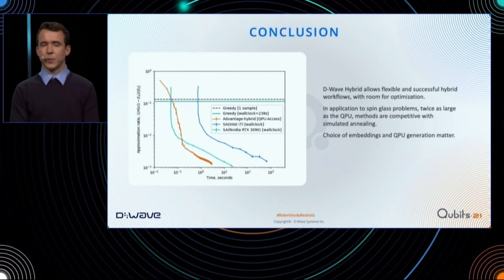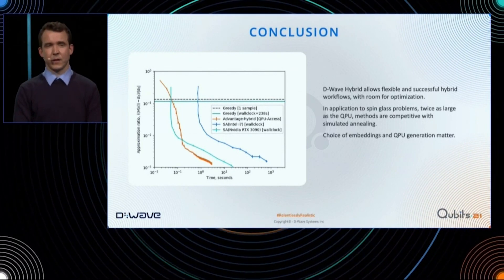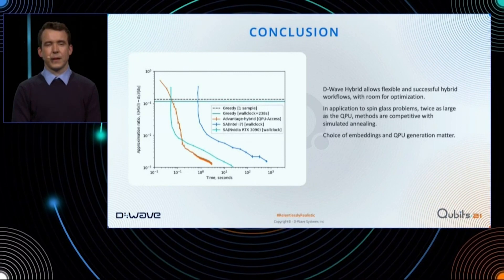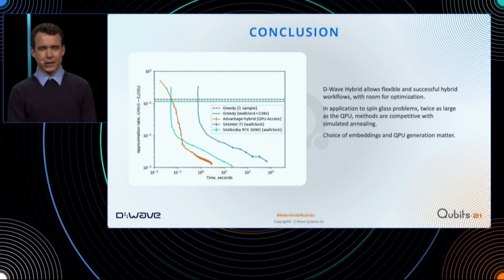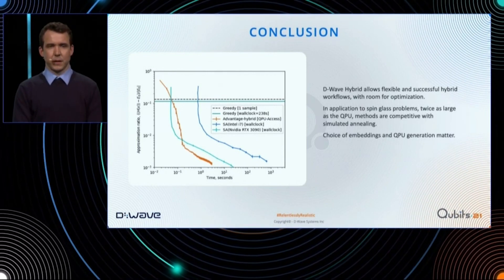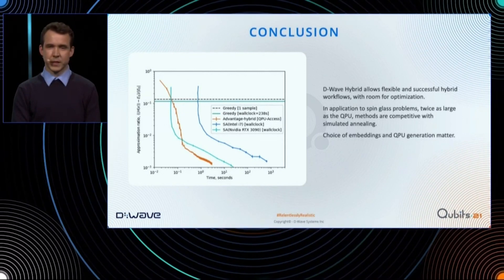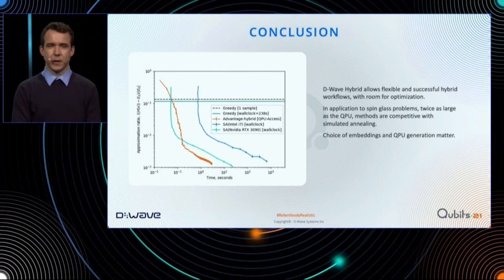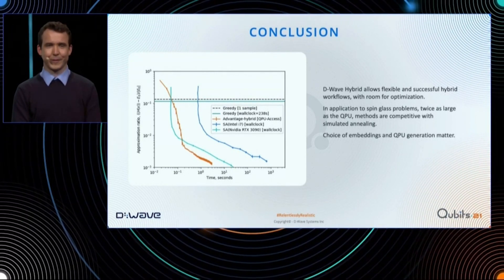In conclusion, I've shown an open-source D-Wave hybrid implementation of this simple workflow where the QPU does almost all the work. It's competitive with simulated annealing with tuned parameters on a couple of different platforms. We've shown the importance of embedding correctly and major gains from the D-Wave 2000Q generation to the Advantage generation. With my last few seconds, I'd like to congratulate Giorgio Parisi on receiving the Nobel Prize in Physics yesterday. Before I came to D-Wave I was in Giorgio's group in Rome, and his methods on replica symmetry breaking and understanding of spin glass models and their rich energy landscape set me up for where I am now. Thank you to him, his research group, and to the audience.